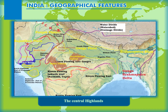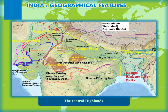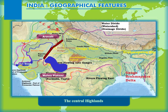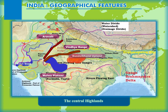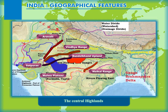Moving from west to east, the subdivisions of the Central Highlands include several small plateaus bordered by the Aravali plateau in the northwest. To the east of the Aravali is the Malwa Plateau, which has the Vindhya range towards its south. To the east of the Malwa Plateau are the Bundelkhand and Baghelkhand uplands, separated from the Chota Nagpur Plateau by the Kaimur-Maikal range.